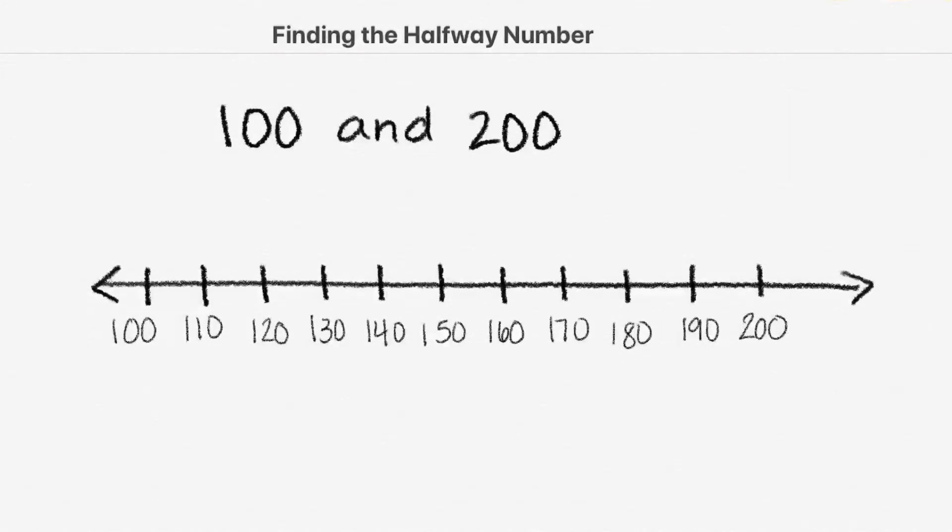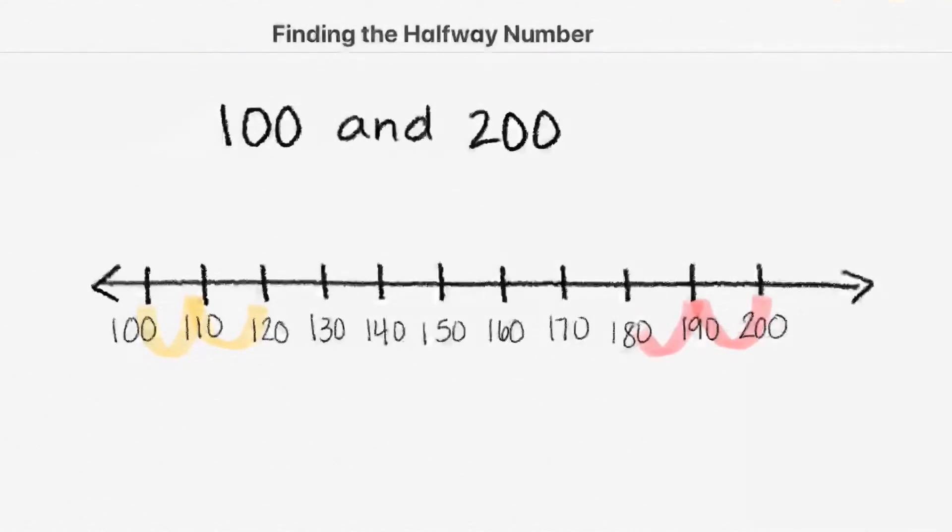Now we have to jump inward from both ends: 1, 1, 2, 2, 3, 3, 4, 4, 5, 5. And that's where they meet halfway at 150. Halfway between 100 and 200 is 150.